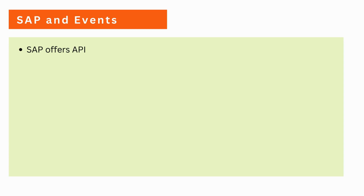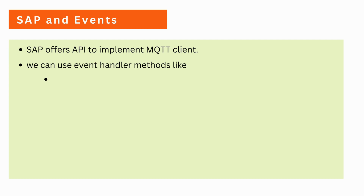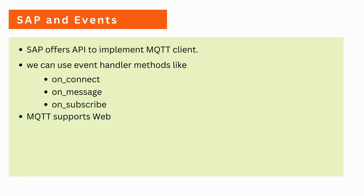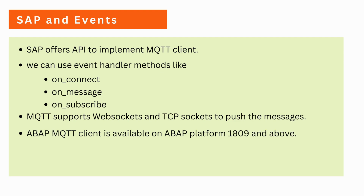SAP offers an events API to implement an MQTT client. We can use this API to integrate with an event broker. This API provides handler methods like OnConnect, OnMessage, and OnSubscribe to interact with an event broker. In SAP, MQTT supports web sockets and TCP sockets to push messages to an event broker. The ABAP MQTT client is available on ABAP platform 1809 and above.